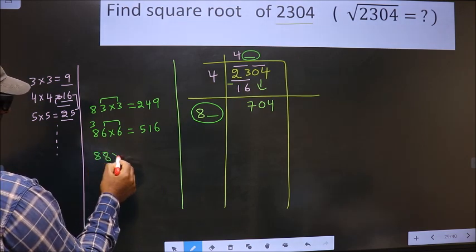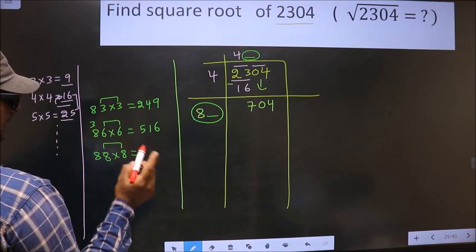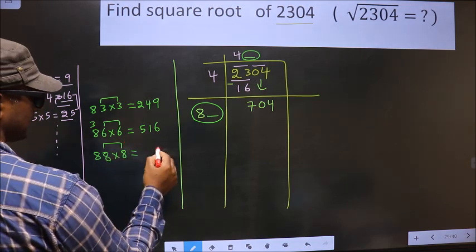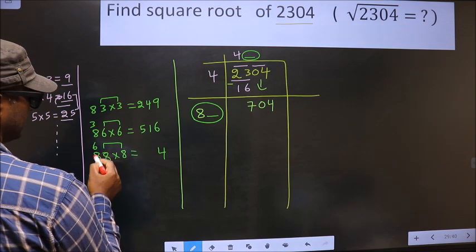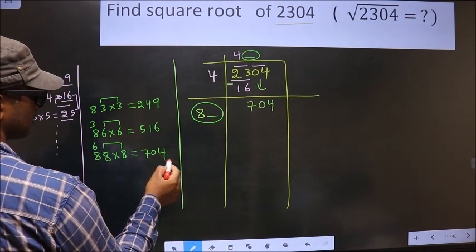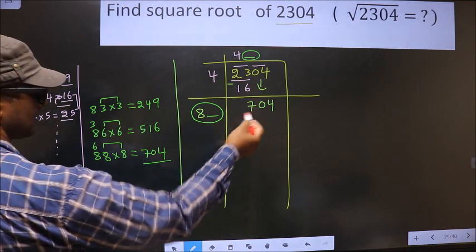88 into 8. These 2 should be same. 8 into 8 is 64. So 4 is 6. 8 into 8 is 64 plus 6, 70. So we got exact 704.